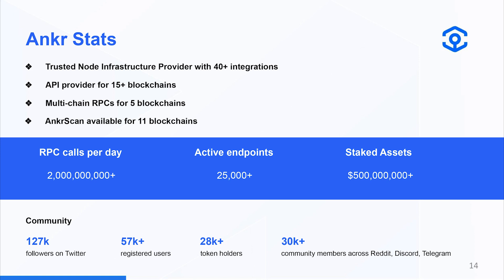We average more than 2 billion RPC call requests per day. We have a significant volume of staked assets in Ethereum and BNB, as we are one of BNB's validator nodes. We are also expanding our liquid staking offering, with Avalanche and Polygon liquid staking now available, and Polkadot and Kusama in beta.